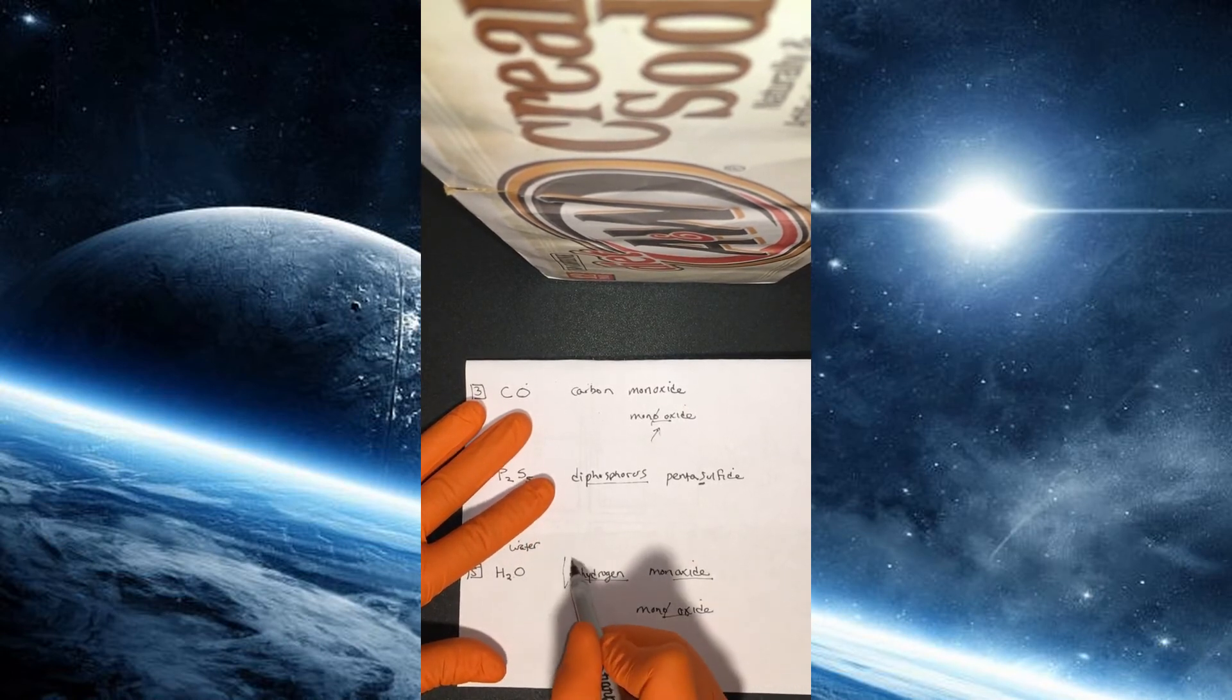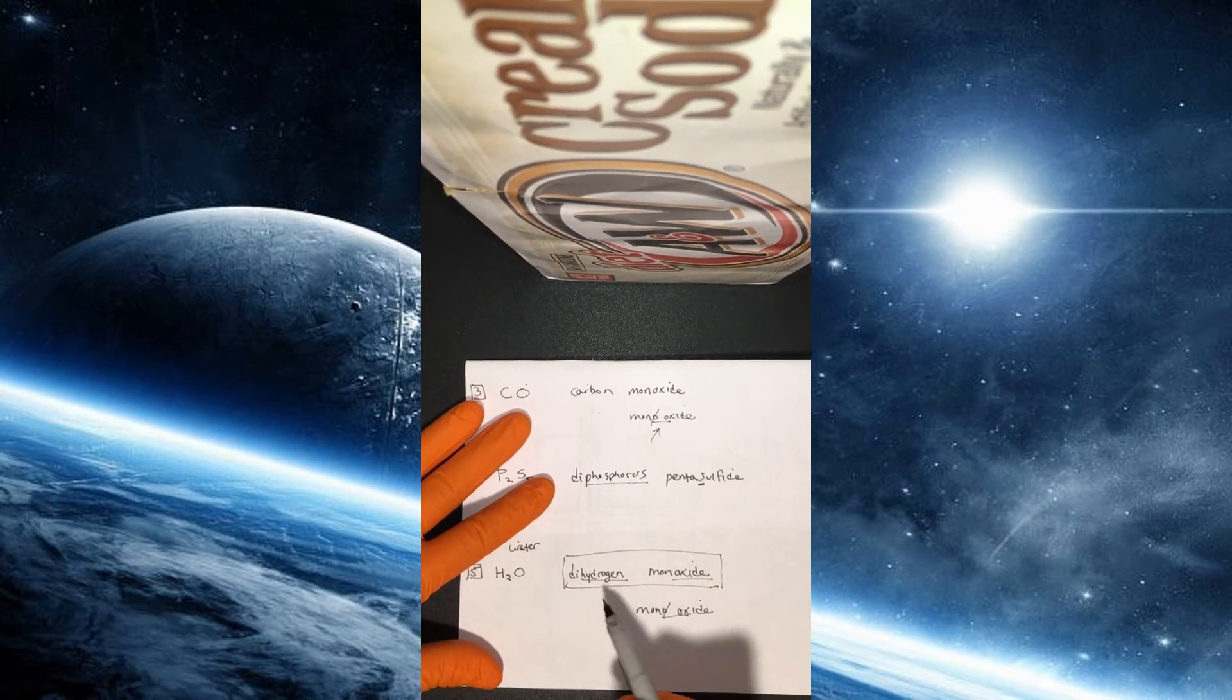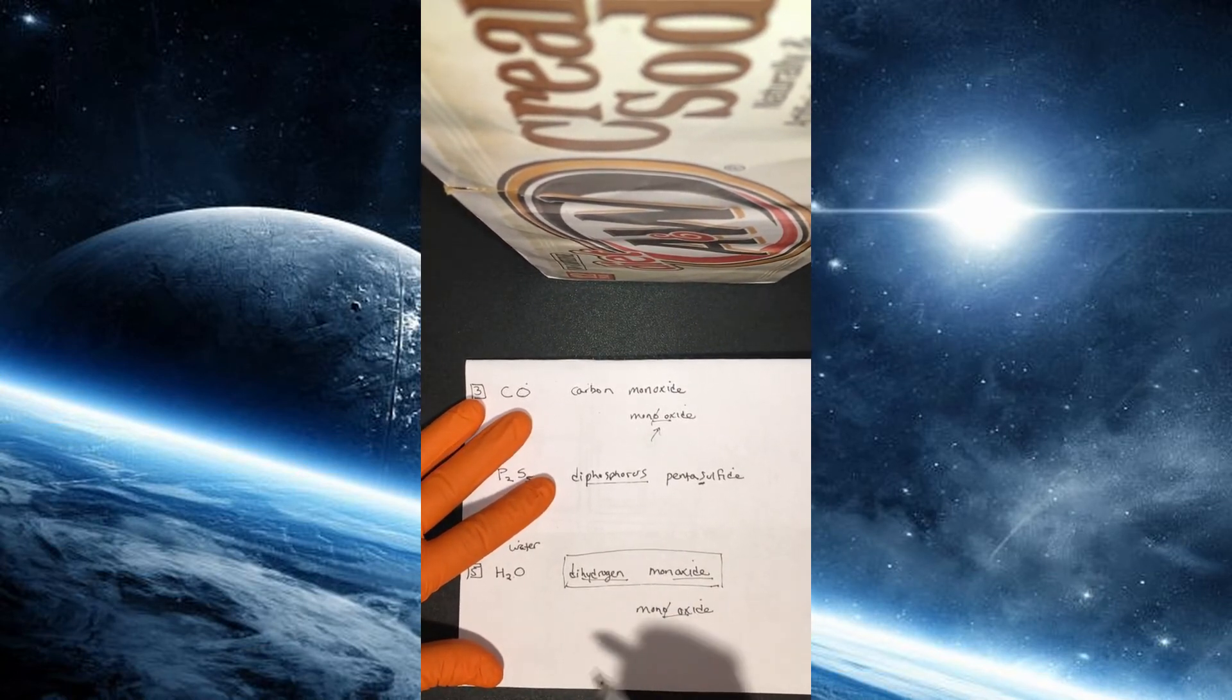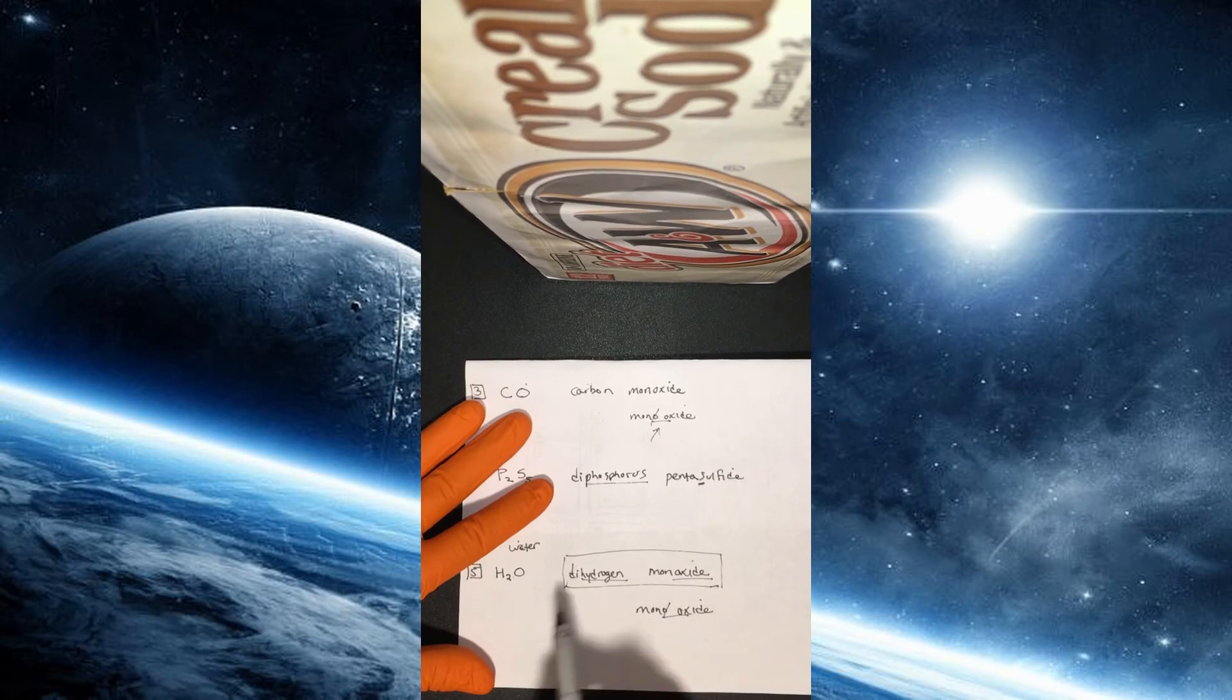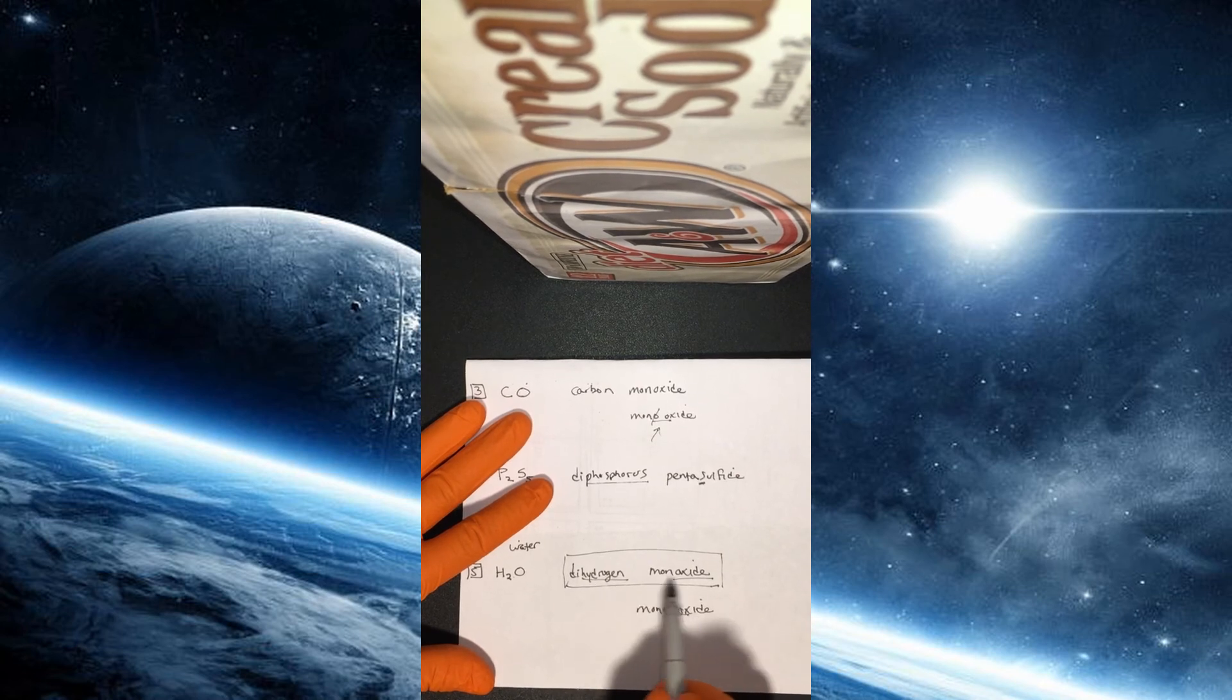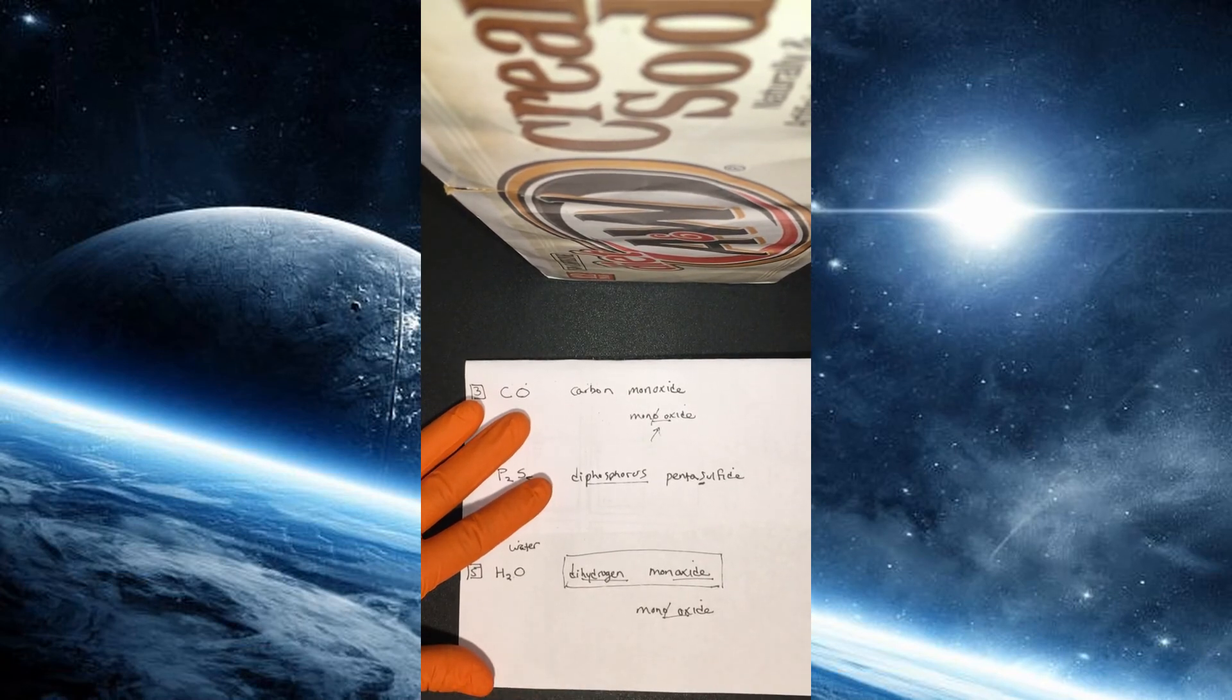And actually, whenever you see those memes on the internet that say beware of the dangers of dihydrogen monoxide, which of course is a joke, which is water. There's obviously not dangers in water unless it's a tsunami. But again, what they're doing is they derived this name from our binary rules, and so dihydrogen monoxide is really just the fancy term for water or H2O. They're of course doing it to sound smart, so that people who don't know these rules can't follow the code and so forth.